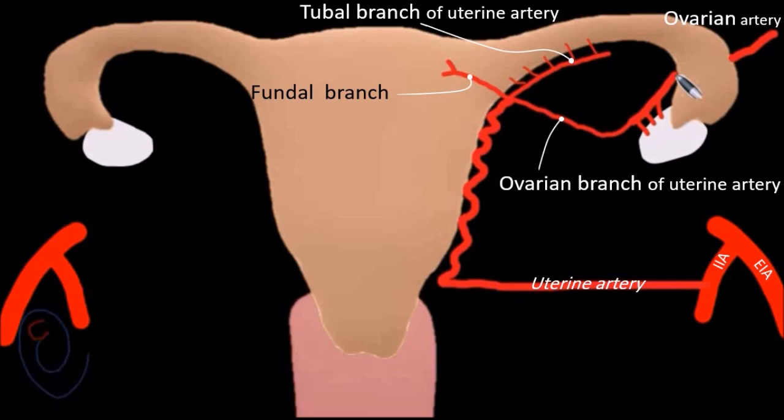The ovarian artery also sends several branches that supply the fallopian tube, and finally anastomoses with the tubal branch of the uterine artery.